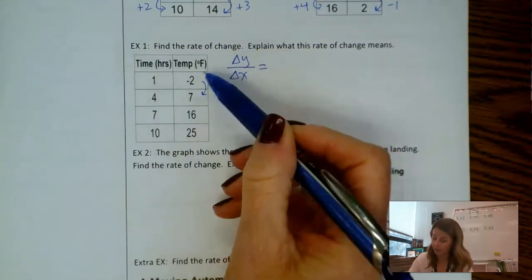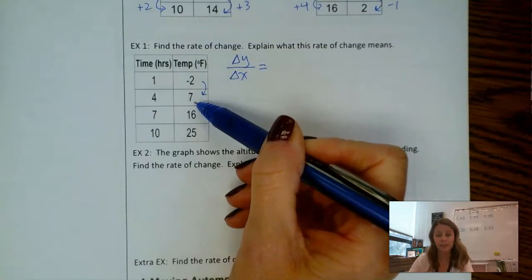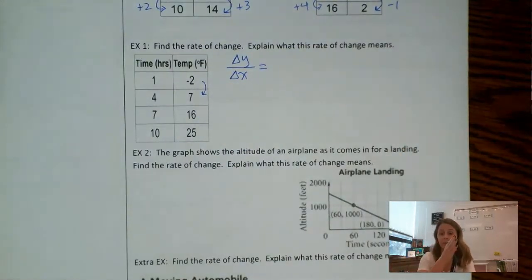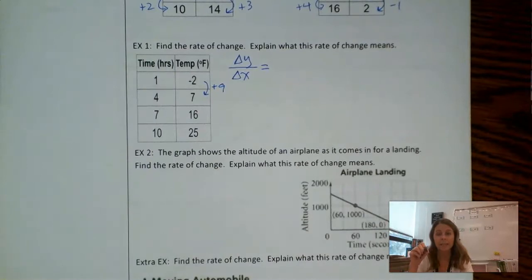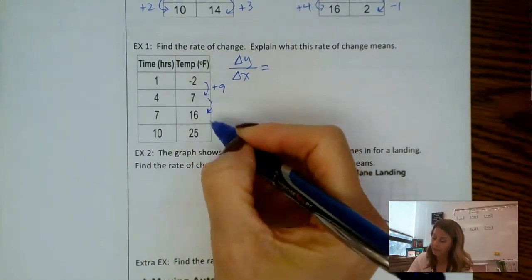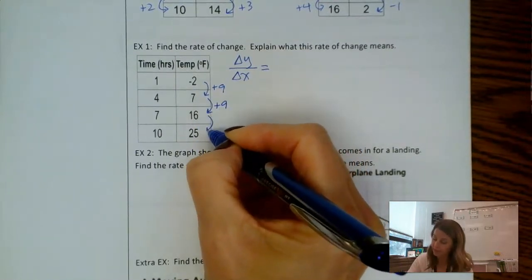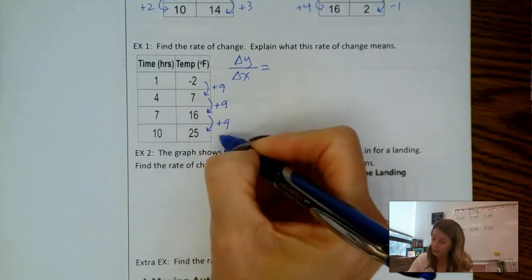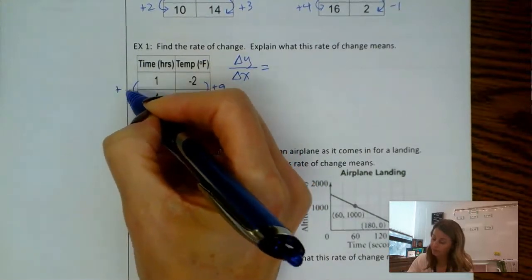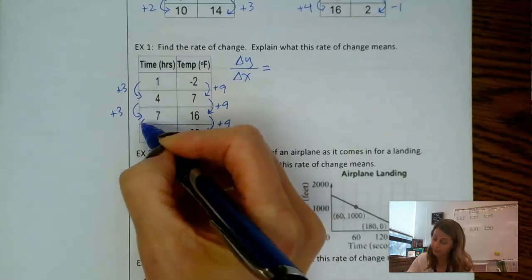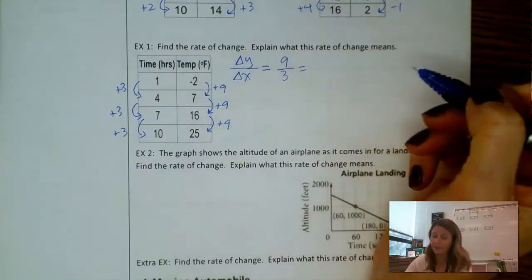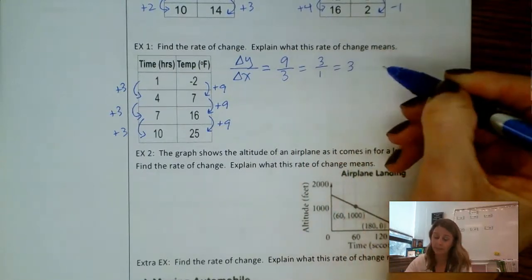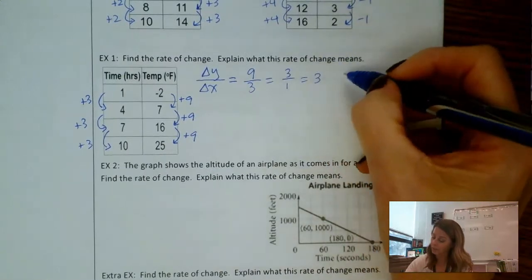So here's where you might want to subtract. Negative 2 all the way up to positive 7 is going up by 9. If you think about a number line, I'm going from negative 2 and then I have to go 2 units to get to 0 and then 7 more to get up to 7. So this is going up by 9. Or you could do 7 minus negative 2, that also gives you 9. 7 up to 16 is also a plus 9. 16 to 25 plus 9. So our change in y is 9. 1 up to 4 is going up by 3. I have to have the same change in y over change in x. So I've got a positive 9 over positive 3. Let's reduce it down though. You could reduce it to 3 over 1, or you could go one step further to say 3.